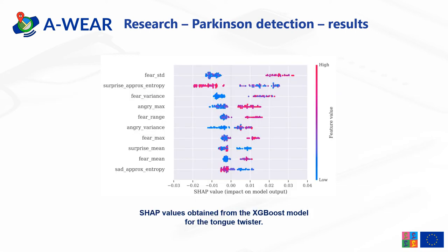The interpretability of the model was explained using XGBoost and is presented on this graph. The most important features according to SHAP values are: standard deviation of fear, approximate entropy of surprise, variance of fear, maximum of anger, range of fear, variance of anger, maximum of fear, mean of surprise, mean of fear, and approximate entropy of sadness. Standard deviation of fear, variance of fear, maximum of anger, variance of anger, maximum of fear, and mean of fear are positively correlated with the prediction of Parkinson's disease.